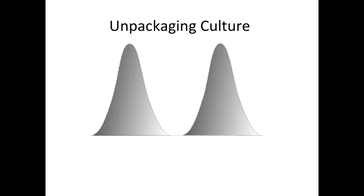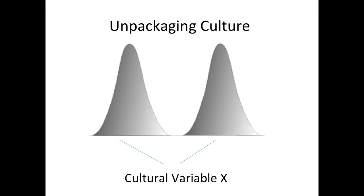Does that make sense? The idea is that we're not simply saying these two cultures or groups are different. We're actually unpackaging what it means to be culturally different — looking at the underlying values, beliefs, practices, or norms that contribute to that difference. When we examine the underlying cultural variable behind why two groups might look different on the surface, we're asking not just what is the difference, but why is there a difference? What's the underlying variable?